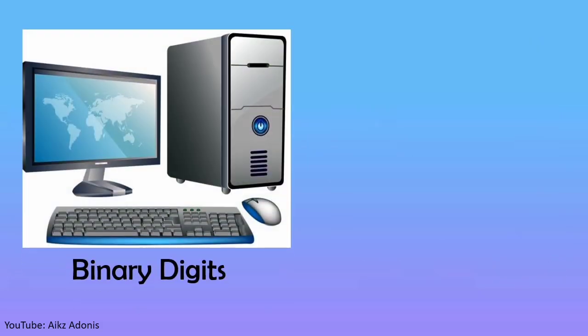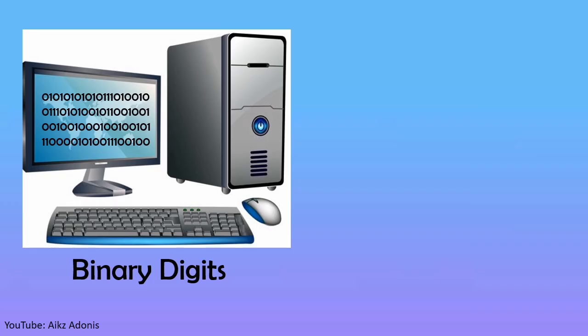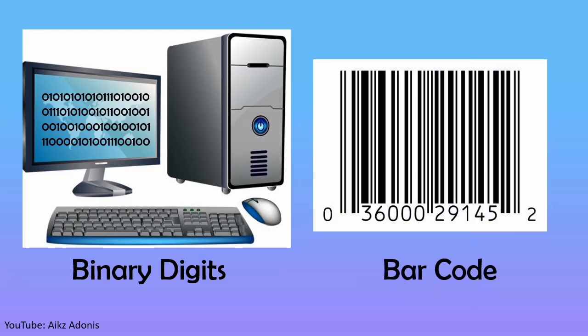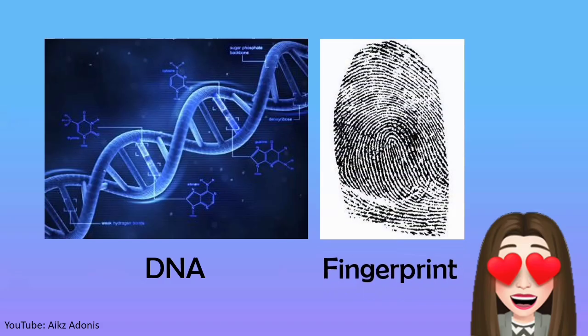Did you know that when you type a word on your keyboard, the CPU reads it differently? The language of a computer is represented by 0 and 1, called binary digits. The computer uses thousands of binary patterns to process any input. A barcode is a readable optical label that contains information about an item — this is what cashiers in the grocery store use in transactions. There are also many unique patterns in our body, like DNA and fingerprints. No two people have exactly the same fingerprint.